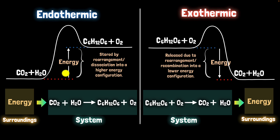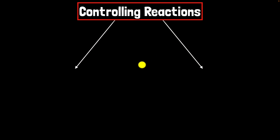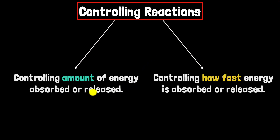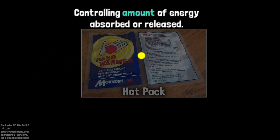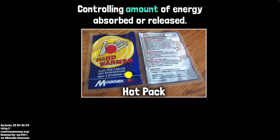Coming back to the big question: how do we control how much energy is released and how quickly? We need to control two things — the amount of energy that's absorbed or released, and how fast it is absorbed and released. Let's start with how to control the amount of energy.